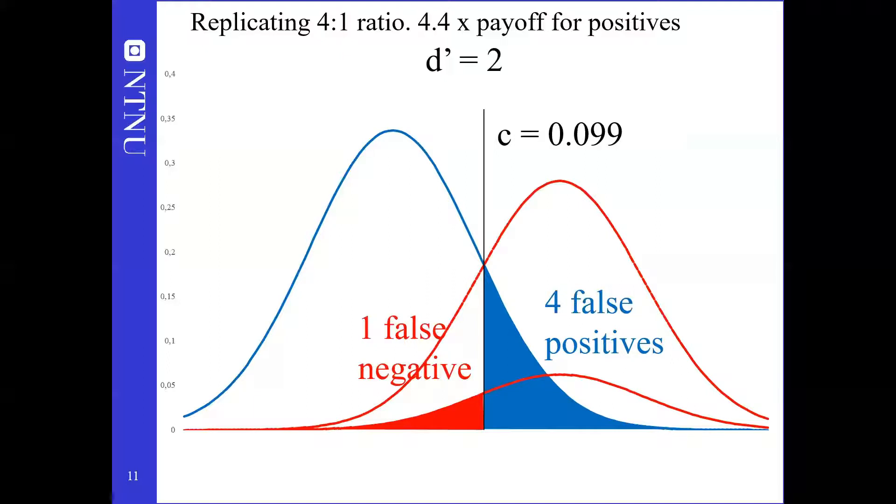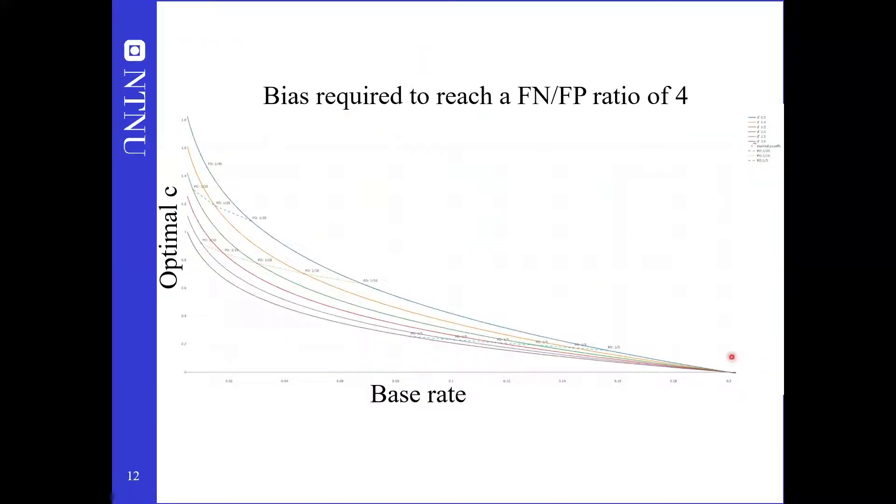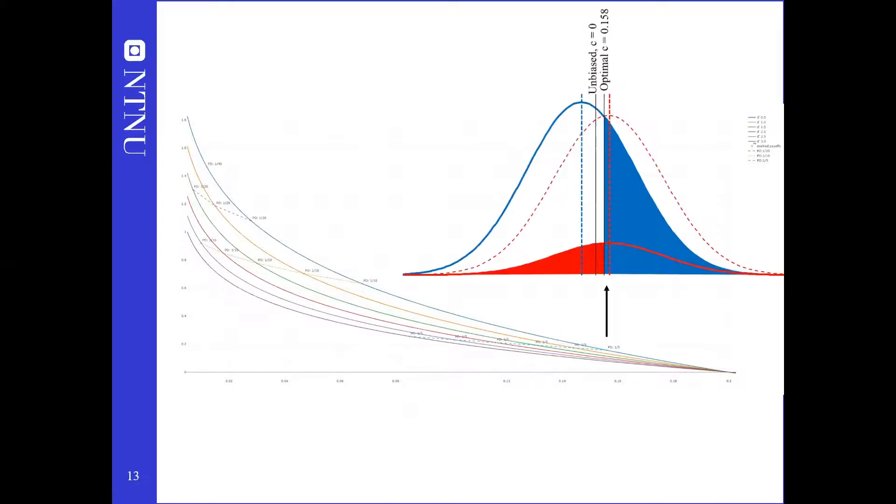If we keep repeating this procedure of picking a base rate and a d' and iteratively adjusting payoff asymmetry and calculating the new decision criterion until we have 4 times as many false positives as false negatives, the results look like this. Each line connects cases with the same d' ranging from 0.5 to 3. This point, for example, corresponds to a base rate of 16%, a d' of 0.5, and false positives being 5 times as important as false negatives.